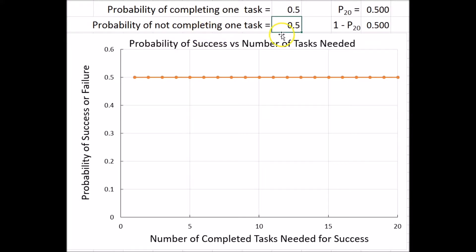The probability of not completing that task would be 0.5. So how does the probability of success — defined as completing a certain number of tasks, one through 20 in this case — before failing to complete that number of tasks depend on the number of tasks you define as your goal? Do you have a low goal or a high goal?